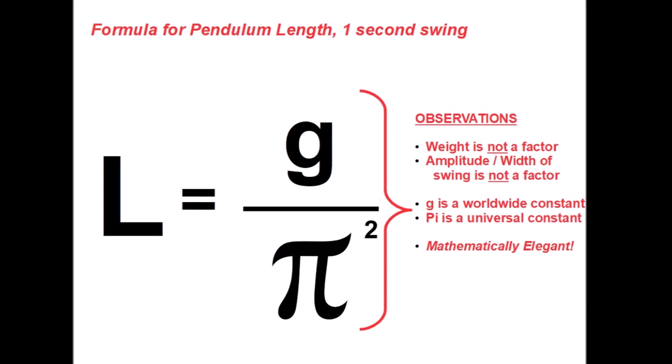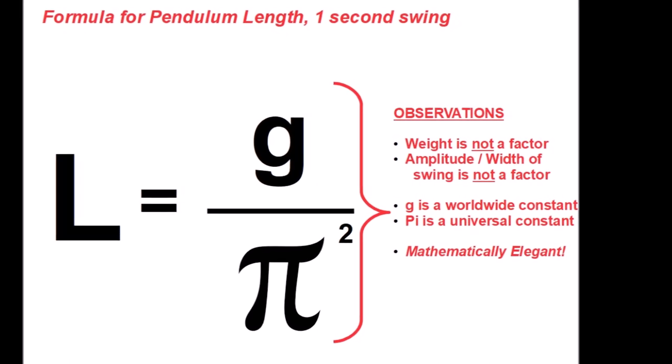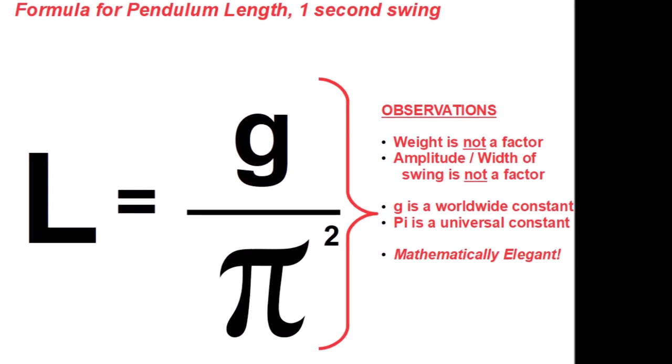Our ideal pendulum length is simply g over pi squared. How beautiful is that? A couple of constants in a very simple formula.